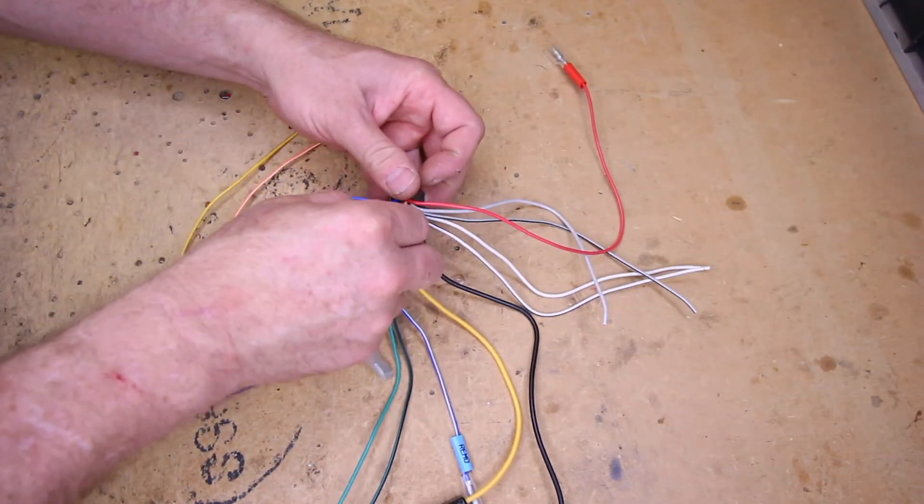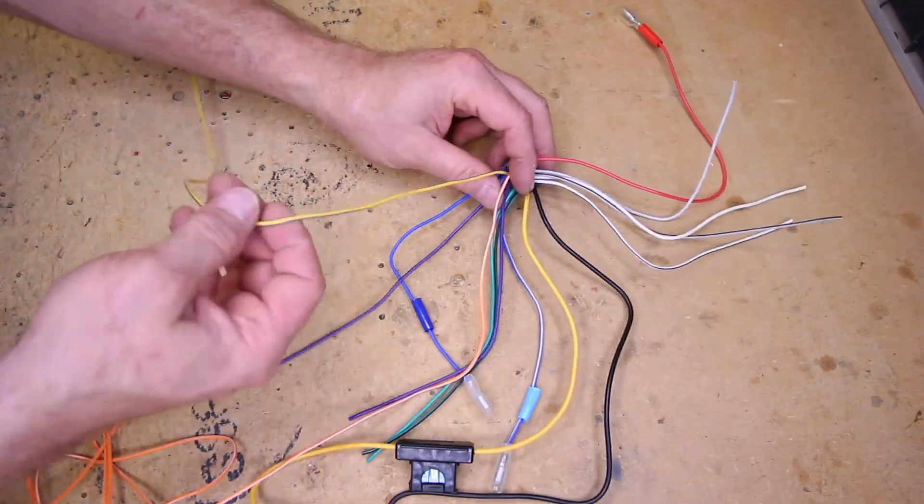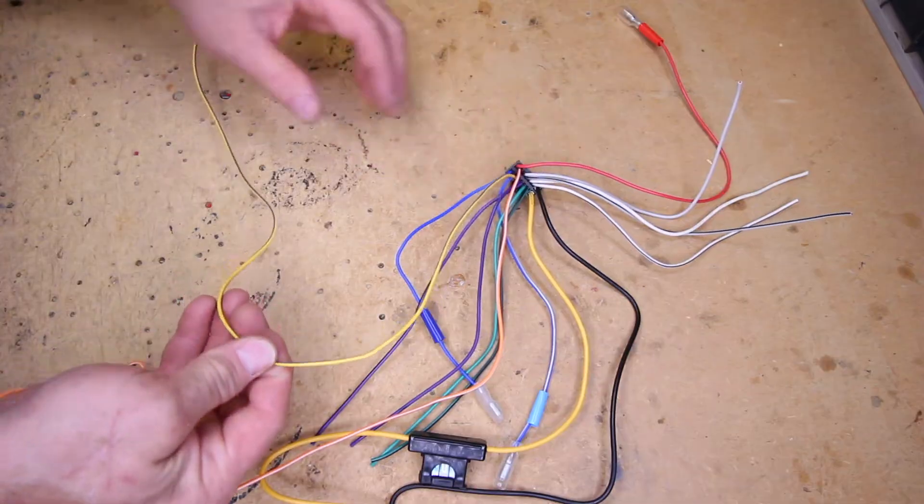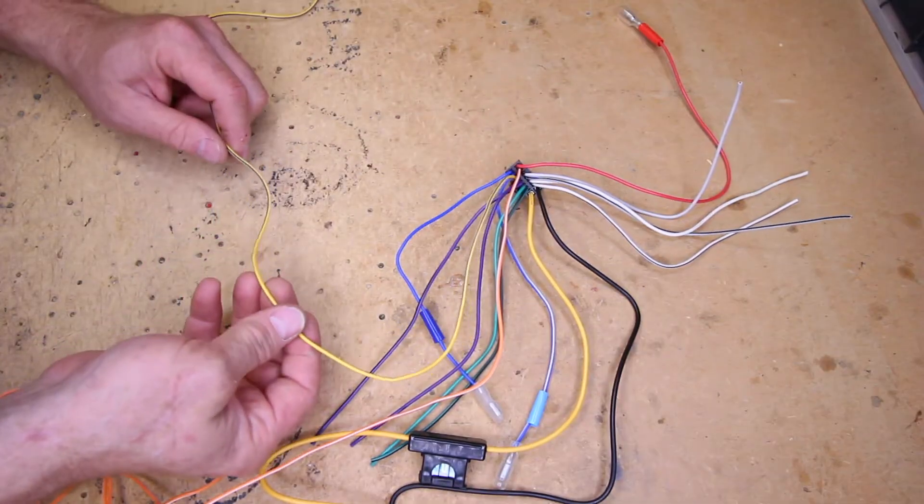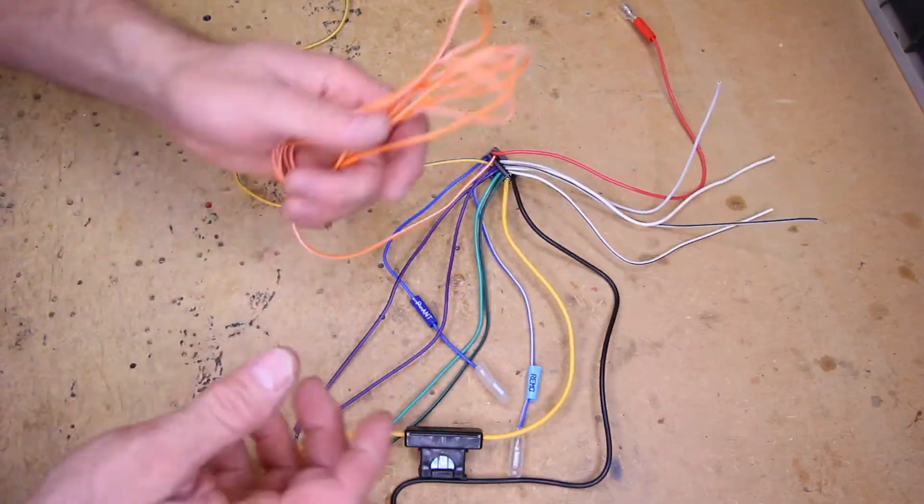Let's go back to the two we skipped over, which are yellow blue and orange white. The yellow blue is going to be your emergency brake wire. This is going to allow you to access menus as well as have the movie play if it's a DVD player.